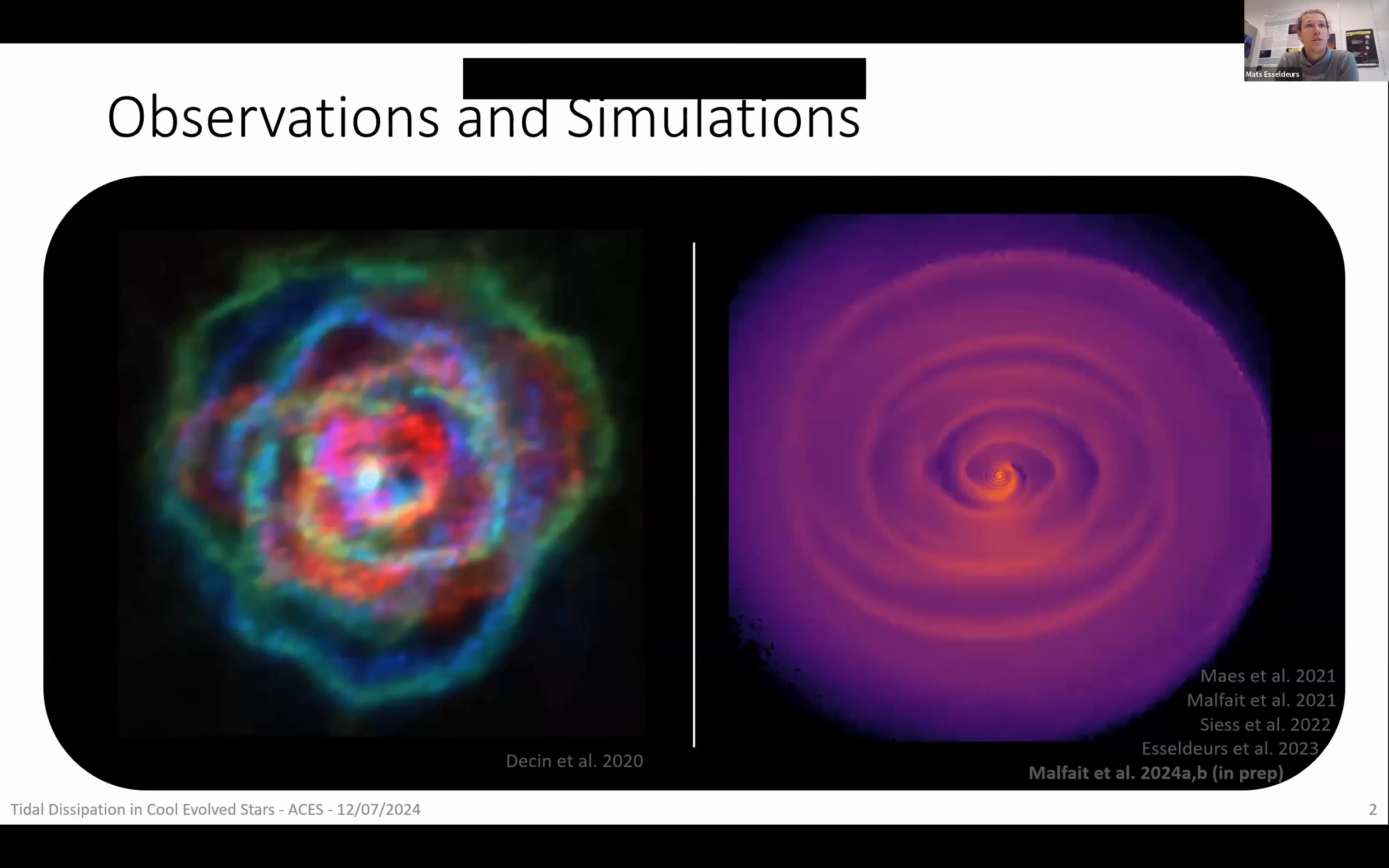Here on the left you can see an observation of the outflow of the AGB star R Achille. It's one of the atomium stars on the atomium postcard you've already heard about in other presentations during the conference. What you can see is that there's clearly some structures within this outflow, and it's not spherically symmetric.